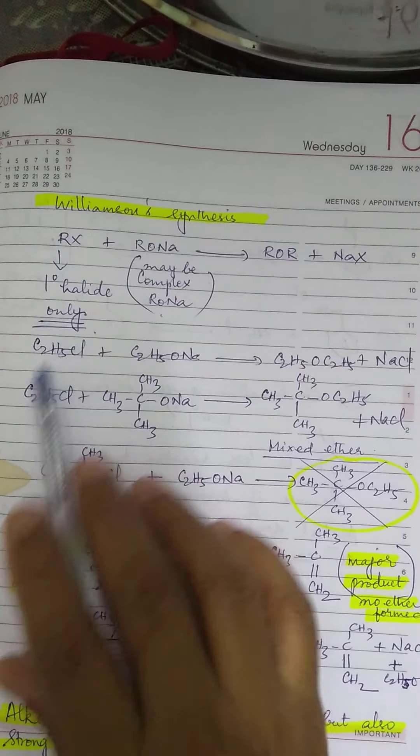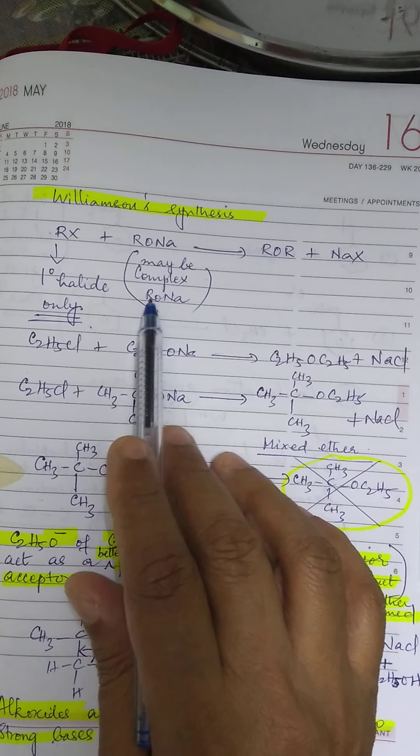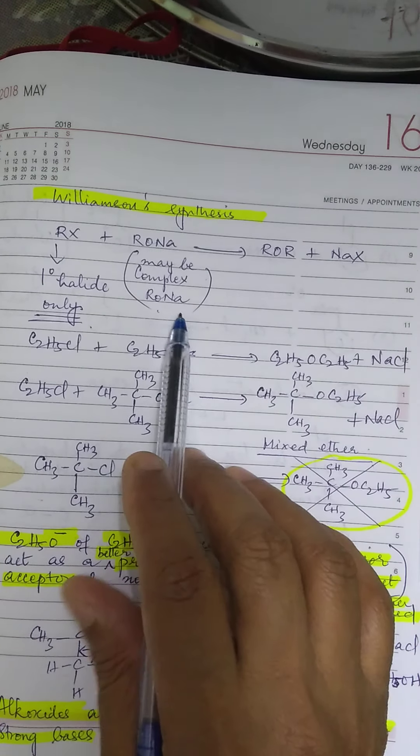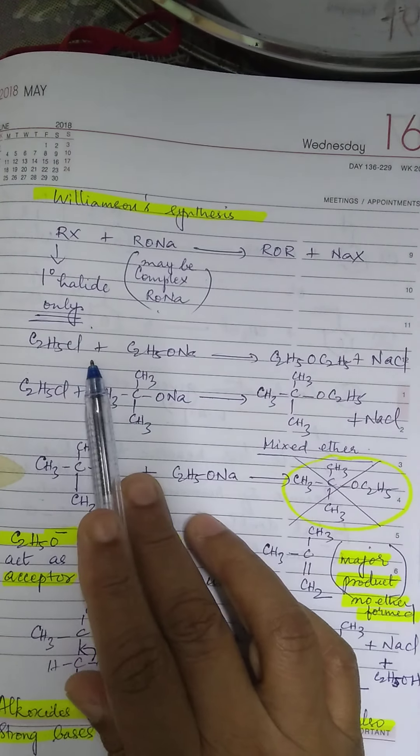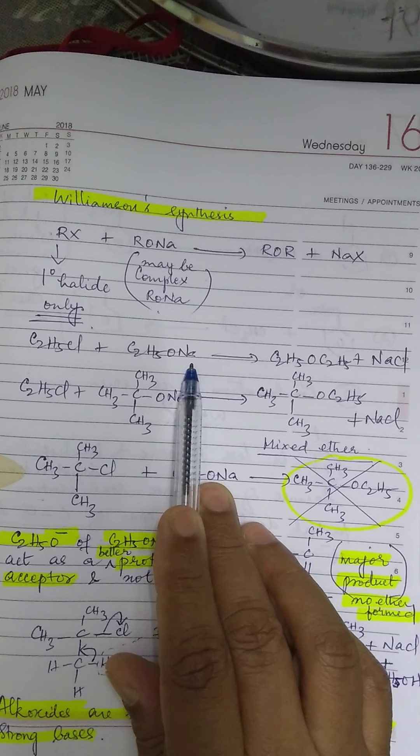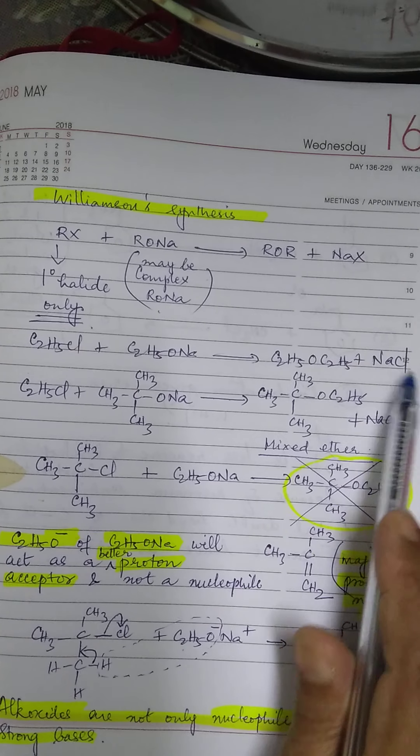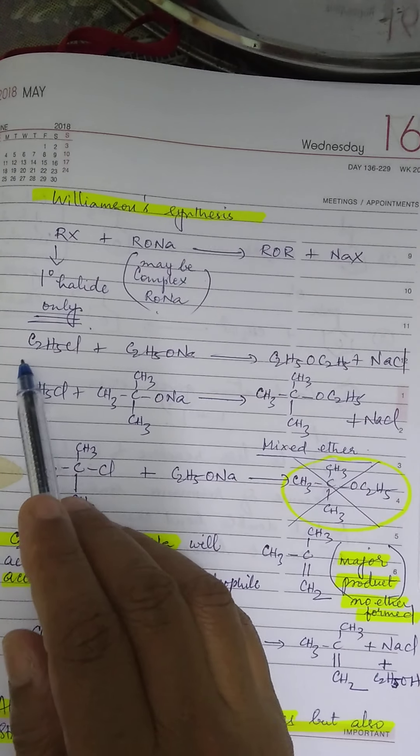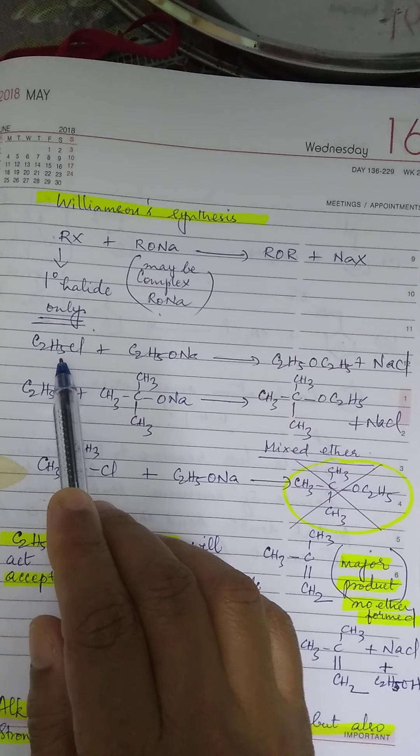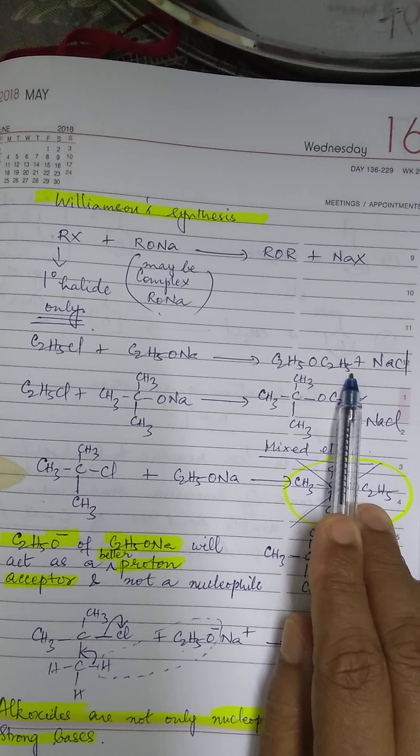Now, what you have, RX, it has to be a primary halide and RONa could be any complex RONa, that is R group may be bulky, no problem. Now, C2H5Cl plus C2H5ONa will give you C2H5OC2H5 plus NaCl. This is a symmetrical ether. Whatever alkyl group you have taken in RX, the same alkyl group you have taken in RONa also and you are getting a symmetrical ether.